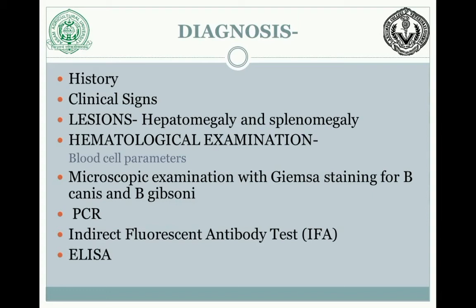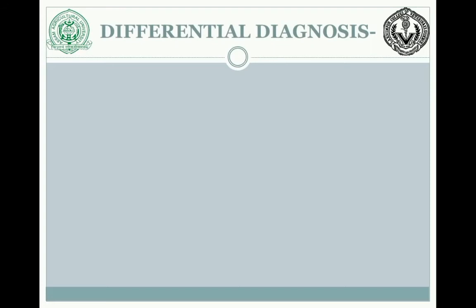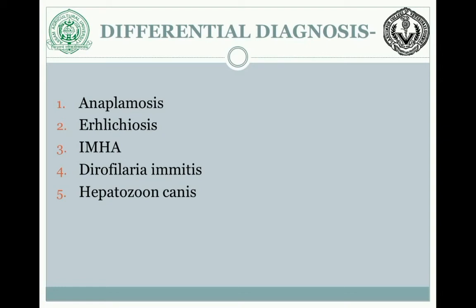For differential diagnosis, babesiosis needs to be differentiated from diseases with similar clinical signs, including anaplasmosis, ehrlichiosis, Dirofilaria immitis infection, Hepatozoon canis infection, and immune-mediated hemolytic anemia (IMHA). An easy way to differentiate babesiosis from these diseases is by microscopic examination of the Giemsa-stained blood smear.